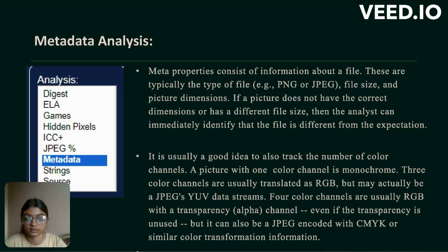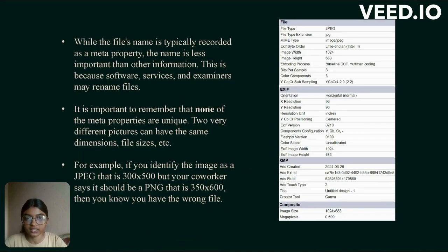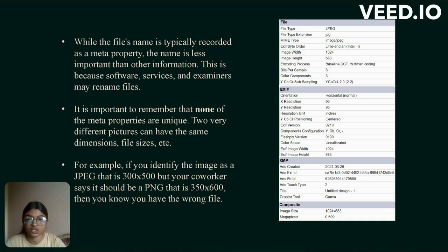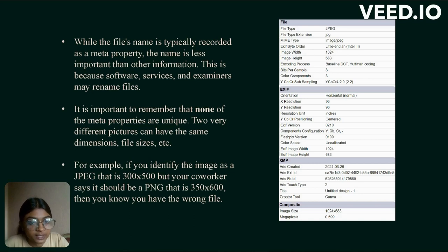While the file name is typically recorded as a meta property, the name is less important than other information because software, services and examiners may rename files. It is important to remember that none of the meta properties are unique — two very different pictures can have the same dimensions, file size, etc. For example, if you identify an image as a JPG at 300x500 but your co-worker says it should be a PNG at 350x600, then you know you have the wrong file. Here you can see file type, file type extension, and all features such as file, EXIF data, XMP data, and composite.